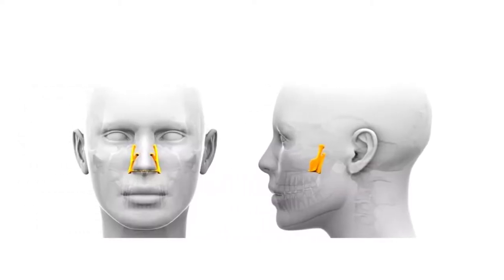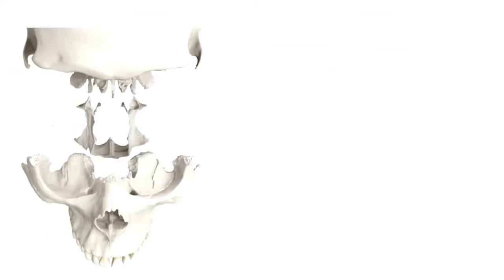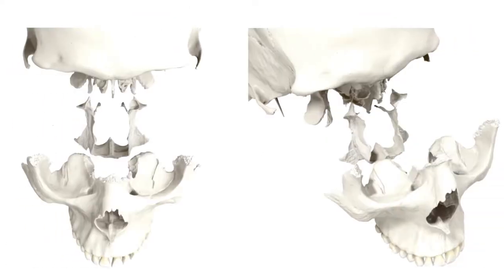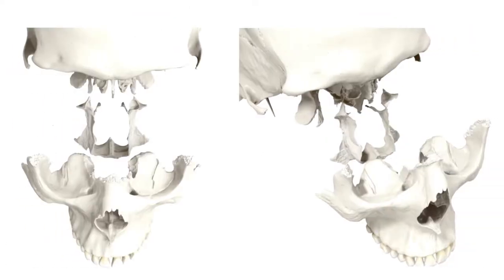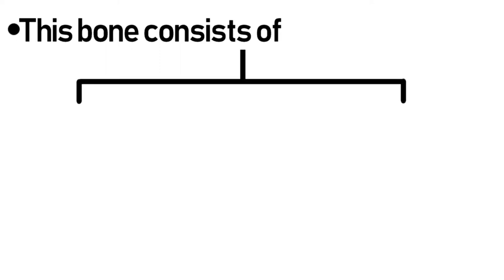This is the anterior and lateral view of the bone. And to understand it better, let's see the bone separately. As you can see, this is the palatine bone. This bone consists of two plates, uniting at a right angle, and three processes.